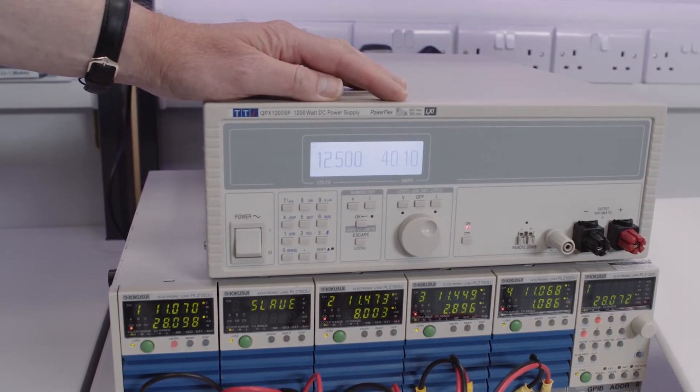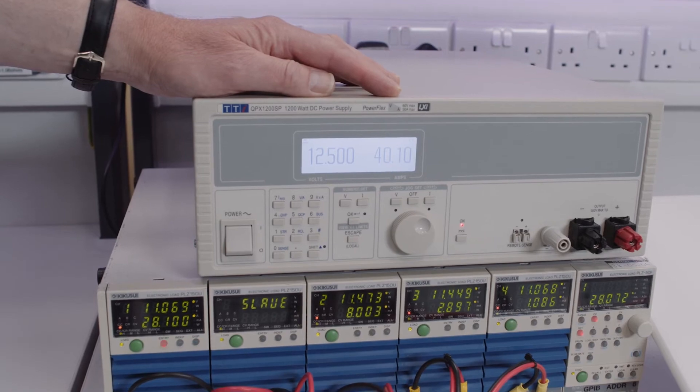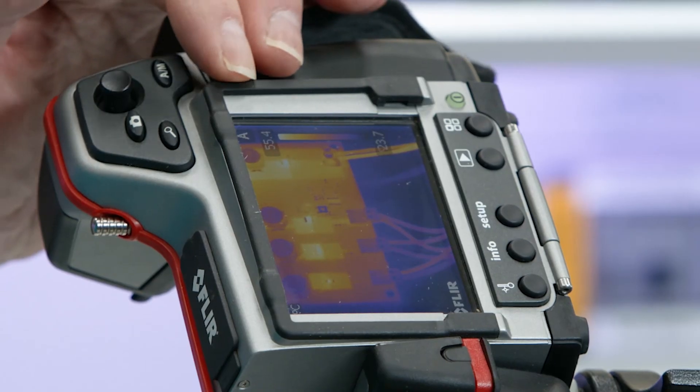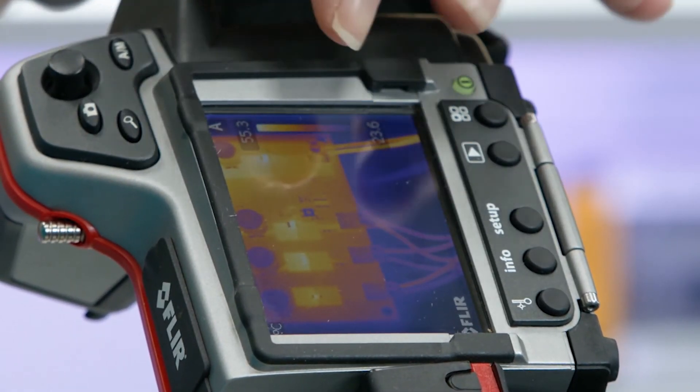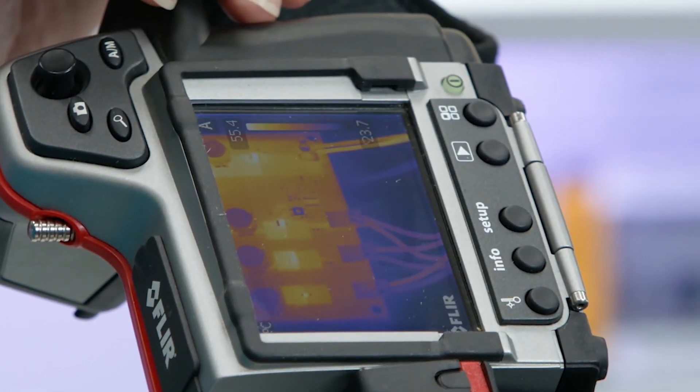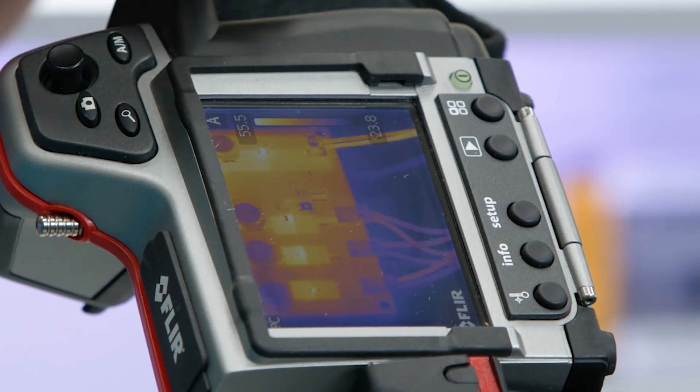We're now going to have a look at the temperature rise that we get in each case. So here we can see the image in the thermal camera, so you can see the outline of the board clearly and you can see the cables coming in on the right hand side of the picture.